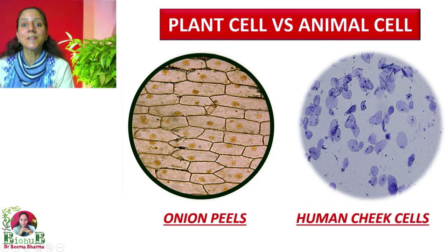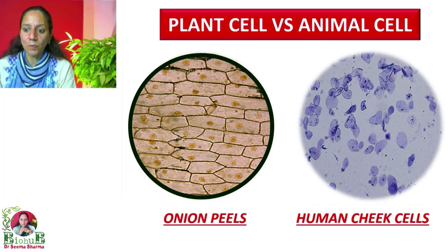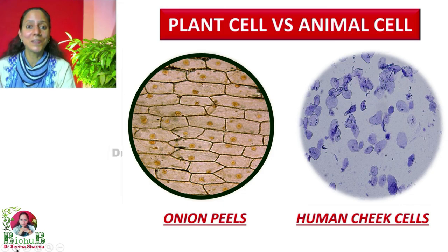These are actual pictures of onion peel cell and human cheek cell taken from the compound microscope. You can clearly see the differences between the animal cell and the plant cell in these two slides. I'm sure the basic structural and functional differences between the animal cell and plant cell are now clear to my viewers.